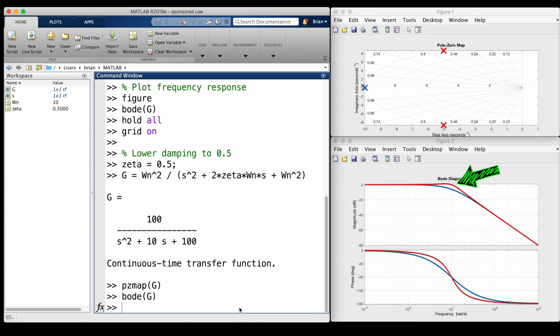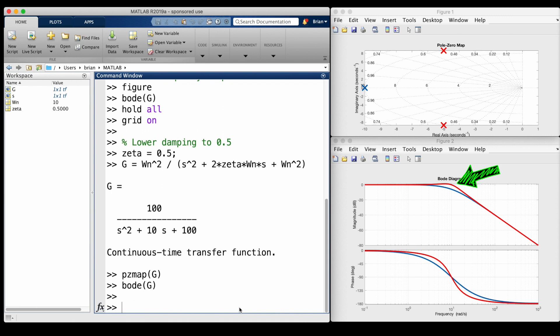The gain ever so slightly is greater than 0 dB pretty close to the natural frequency, before falling off again at minus 40 dB per decade. This means that if we input a sine wave into this system at around 7 radians per second, the amplitude of that output sine wave will be slightly larger than the input.